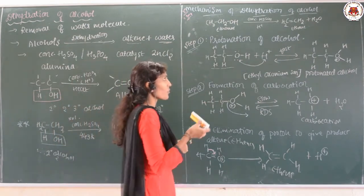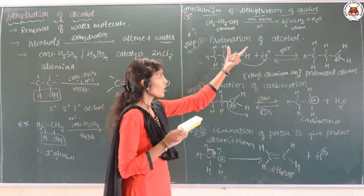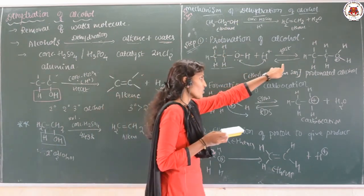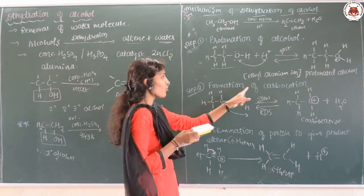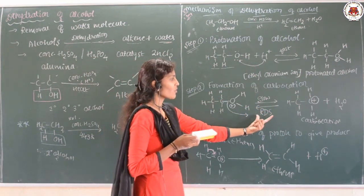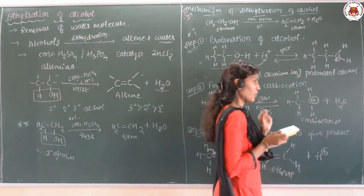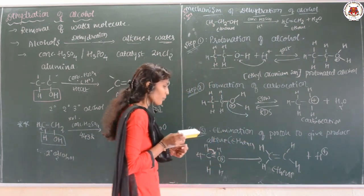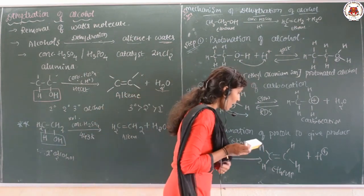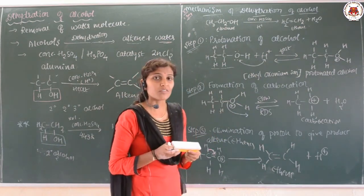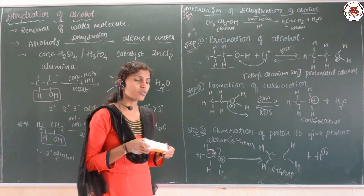We discussed the mechanism of dehydration: ethanol is converted into ethene. Step 1 is protonation of the alcohol — it is a faster step forming the protonated alcohol. Step 2 is formation of the carbocation — water is eliminated, this is the reversible and slowest step, the rate determining step. Step 3 is elimination of the proton from the carbocation to give alkene (ethene). This reaction involves cleavage of the C–O bond. Further reactions will be continued in the next class. Thank you.